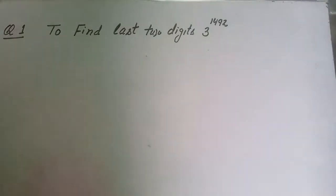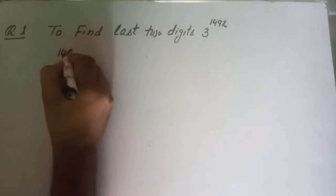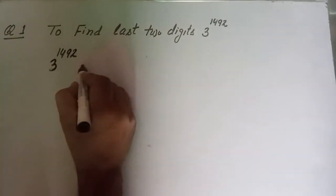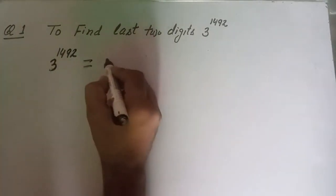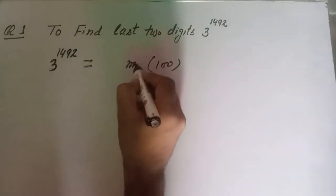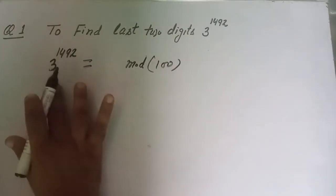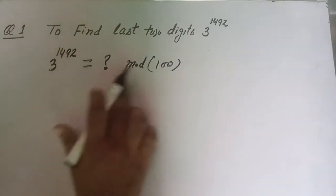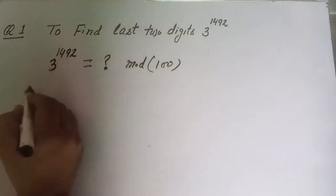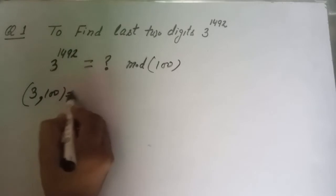So here we have to find the remainder when 3^1492 is divided by 100. This problem converts into modulo arithmetic — we have to find the number congruent to 3^1492 modulo 100. Fortunately, 3 and 100 are co-prime.